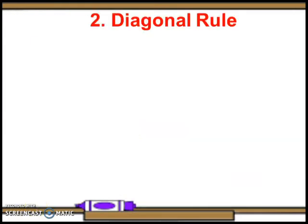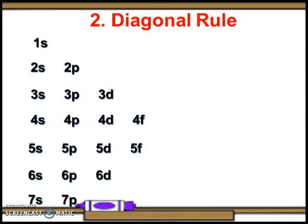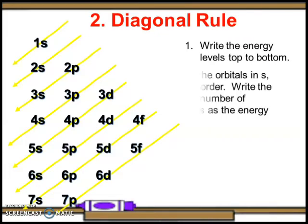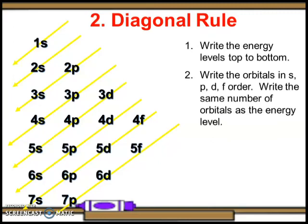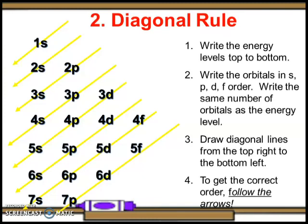Next is the diagonal rule. The sub levels are arranged as: 1s, 2s, 2p, 3s, 3p, 3d, 4s, 4p, 4d, 4f, 5s, 5p, 5d, 5f, 6s, 6p, 6d, 7s, 7p. Write the orbitals in spdf order with the same number of orbitals as the energy level, then draw diagonal lines from top right to bottom left. Follow the arrows to get the correct filling order.